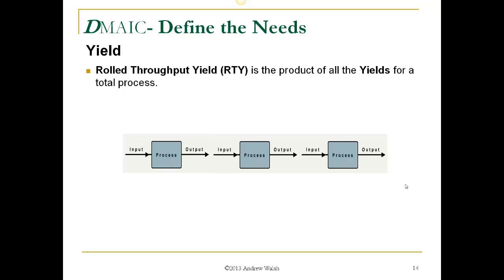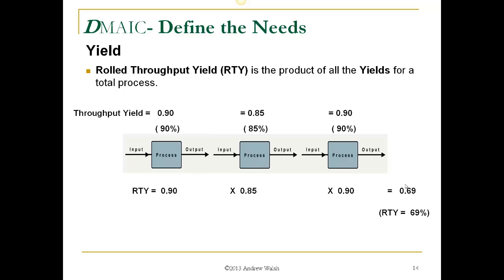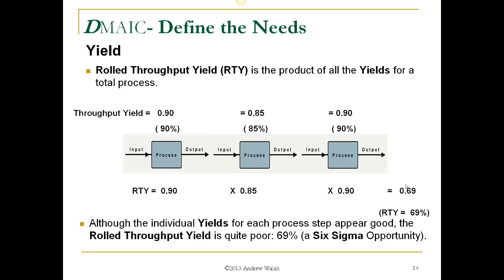Rolled throughput yield is the product of all the yields for a total process. For example, with three process steps having throughput yields of 0.9, 0.85, and 0.9 — which each appear close to 90% — the actual rolled throughput yield when multiplied across all steps is only 69%. Although the individual yields for each step appear good, the rolled throughput yield is quite poor at around 70%. This is a very serious Six Sigma opportunity, because each time you lose 10% at a step, those losses compound across every step.